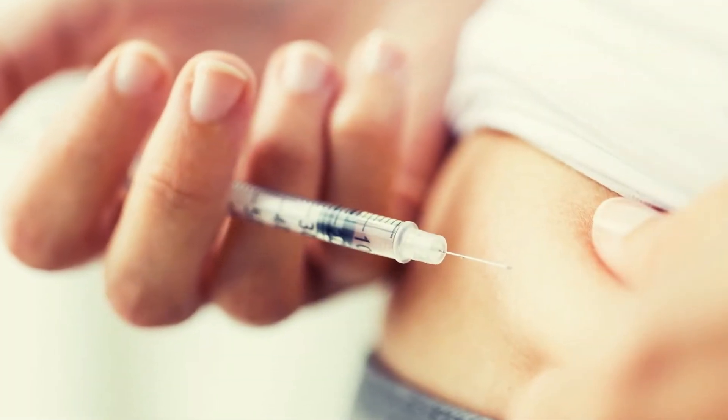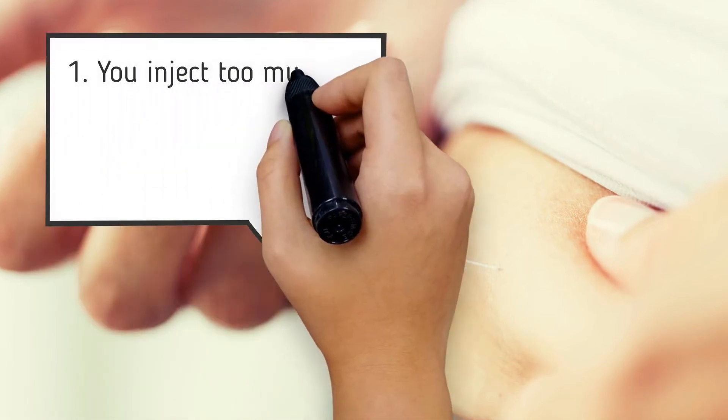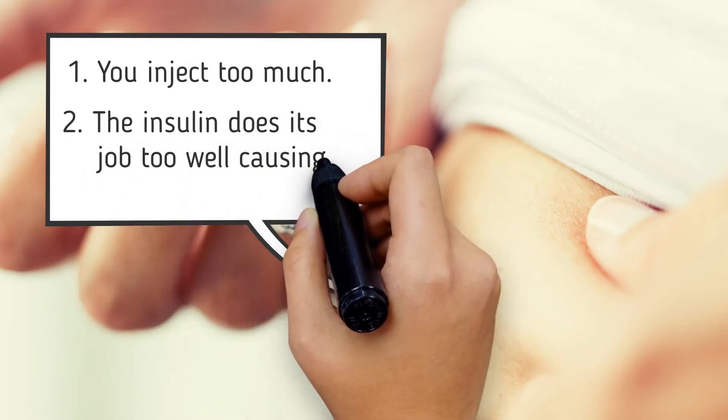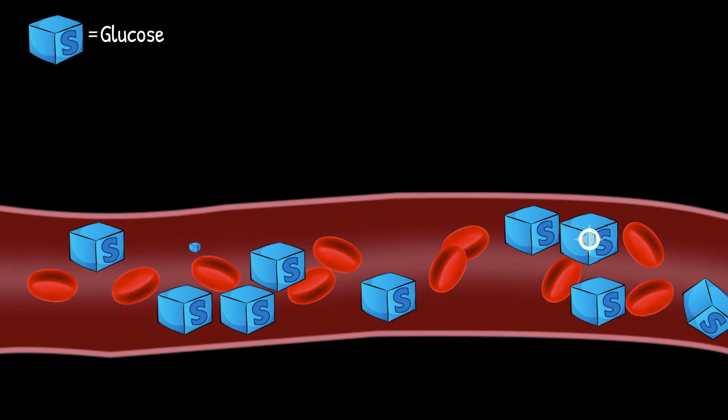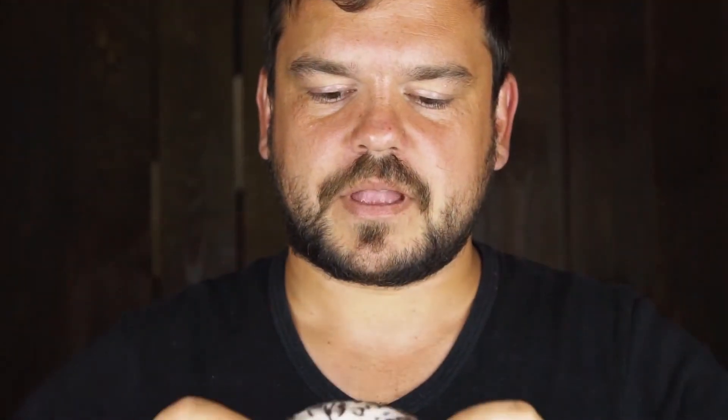Too hungry. When you inject insulin, you risk two things: one is that you inject too much, and the other is that the insulin does its job too well, which can result in hypoglycemia, meaning your blood sugar drops below the normal level. As soon as this happens, your brain sends out a hunger signal to encourage you to eat. This way, your body can boost your blood sugar level. Type 2 diabetes patients are well known to suffer from bouts of binge eating, usually as a result of injecting too much insulin.